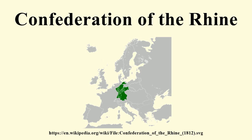Prussia and Austria were not members. Napoleon sought to consolidate the modernizing achievements of the revolution, but he wanted the soldiers and supplies these subject states could provide for his wars. Napoleon required the Confederation to supply 63,000 troops to his army. The success of the Confederation depended on Napoleon's success in battle, and it collapsed when he lost the Battle of Leipzig in 1813.